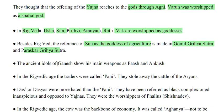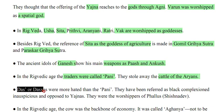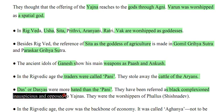The ancient idol of Ganesh shows his main weapons as Paz and Ankush. In the Rigvedic age, traders were called Pani — they stole the cattle of Aryans. Das or Dasyas were more hated than the Pani; they were referred to as people of black complexion who opposed Yajnas and worshipped Fallus (Shishnadev).